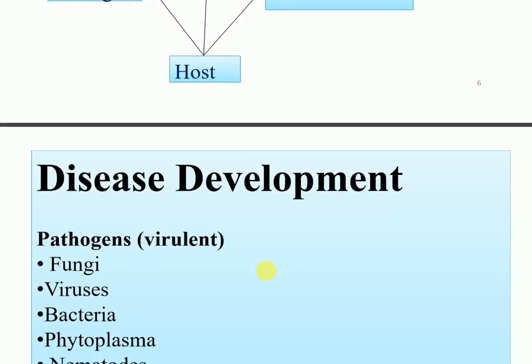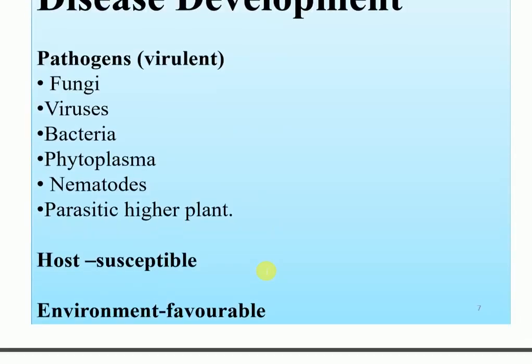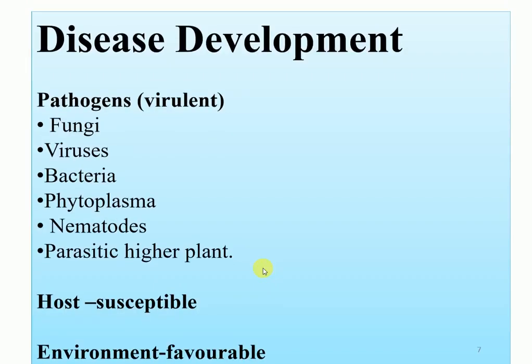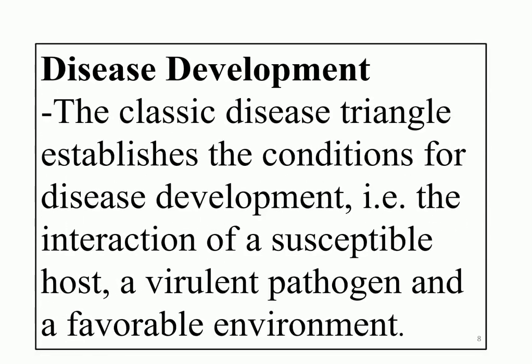Disease development needs three factors as described earlier. The pathogens that are virulent in nature include fungi, viruses, bacteria, phytoplasma, nematodes, and parasitic higher plants. If the host is susceptible and the environment is favorable, these pathogens cause the development of diseases.